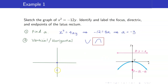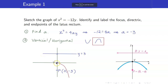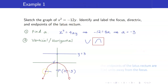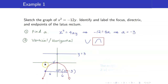We are now ready to sketch the graph. The vertex is at the origin, and the parabola opens downwards because A is negative 3. The focus is at (0, −3). The directrix is 3 units above the vertex, so y equals 3. For the endpoints of the latus rectum, the half-length is 2 times the absolute value of A, which is 2 times 3 equals 6. So the x-coordinates are negative 6 and 6, and the y-coordinate is negative 3. The first endpoint is (−6, −3) and the second endpoint is (6, −3).